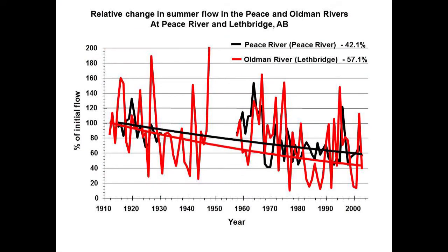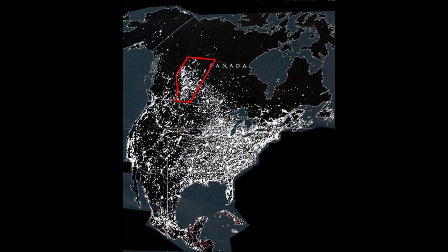The other rivers in Alberta are also declining in summer flow, though not as rapidly as the South Saskatchewan. It's not only a huge population increase but a huge industrial increase. At that latitude, anywhere else in Canada there's very little going on, but the intensity there is comparable to the US Midwest.